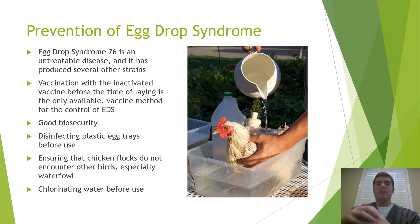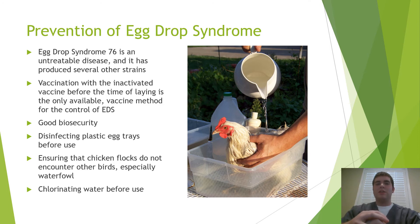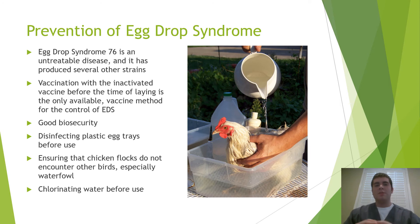Vaccination with the inactivated vaccine before the time of laying is the only approved method of prevention, with a vaccine created back in 2012. Since egg drop syndrome really doesn't occur in the US very often, most people rely on simply creating an egg drop syndrome free zone. Good biosecurity, disinfecting plastic egg trays before they're used, and chlorinating water before it's used are great prevention methods. Perhaps the most important is making sure your chicken flocks don't come into contact with any other bird species, especially ducks, as they are the primary carriers and transmitters.